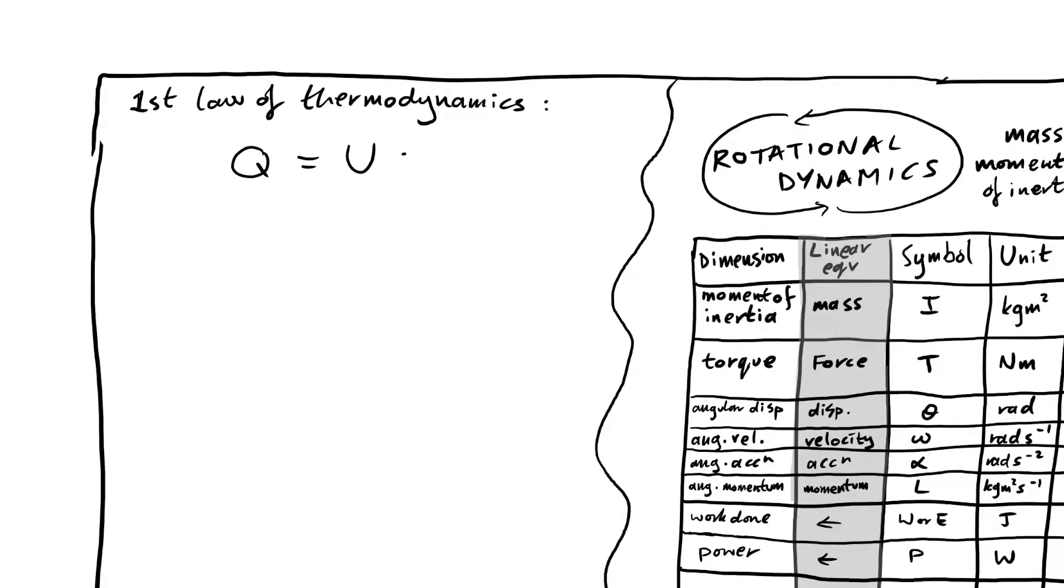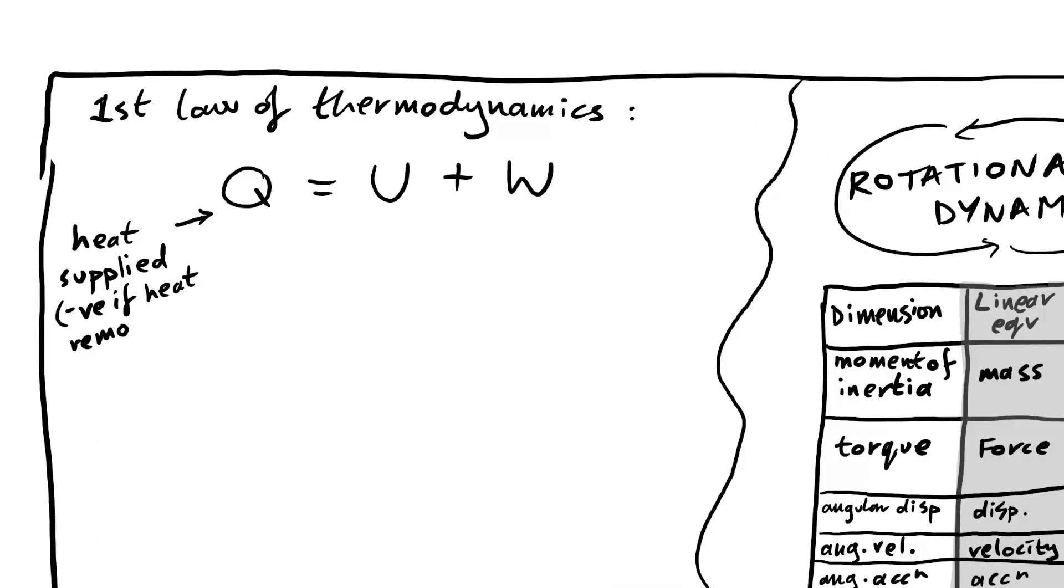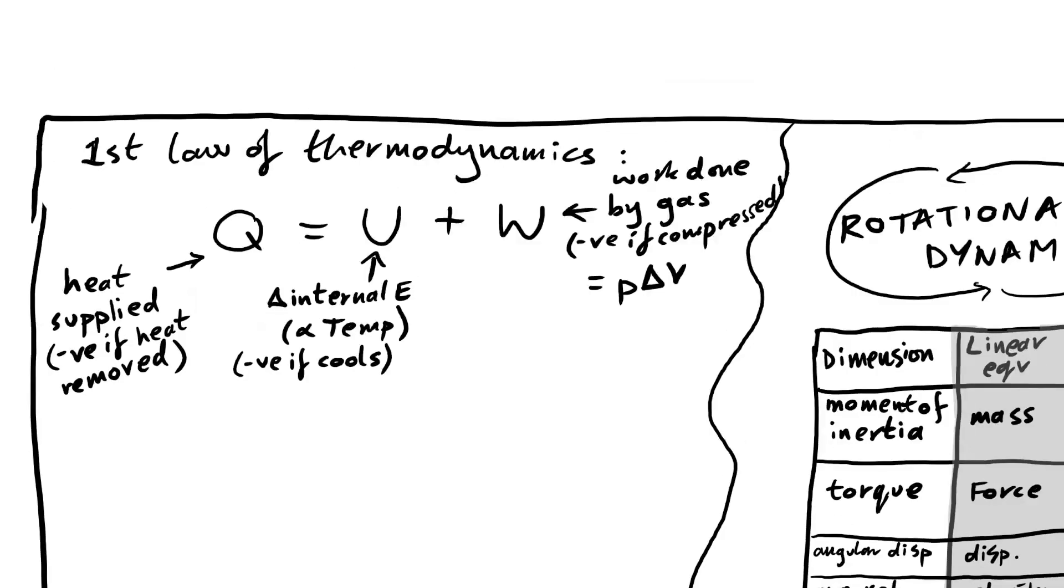Let's go on to thermodynamics. Here's the first law of thermodynamics. Q is equal to delta U plus W. Q is heat supplied to a gas. It's negative if heat is removed. U or delta U is the change in internal energy. That's of course proportional to temperature. So that means it's negative if it cools. And W is work done by gas. A gas needs to expand if it's going to do work, just like if you do work with a force, you actually have to move something. And we know that's equal to P delta V.